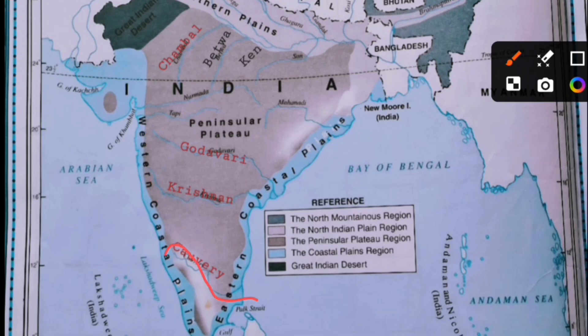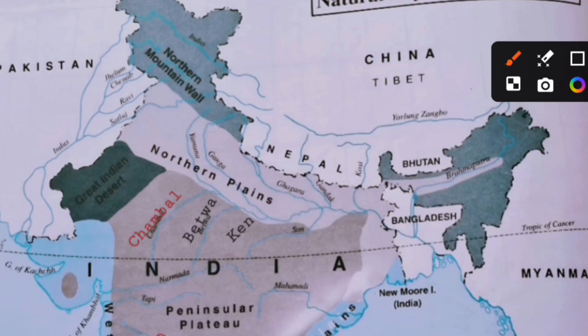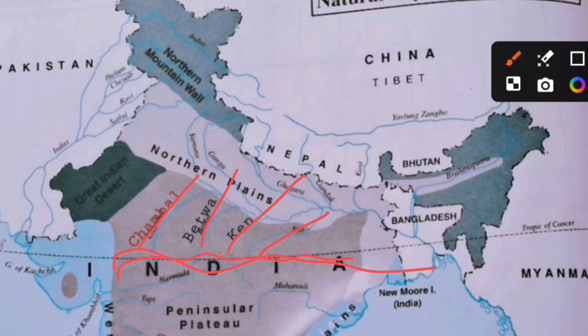Kaveri and Mahanadi also belong to the peninsular river system. Chambal, Sind, Betwa, Ken, and so on originate in the northern part of the peninsula, but they belong to the Ganga river system — not the peninsular river system. Please remember this.